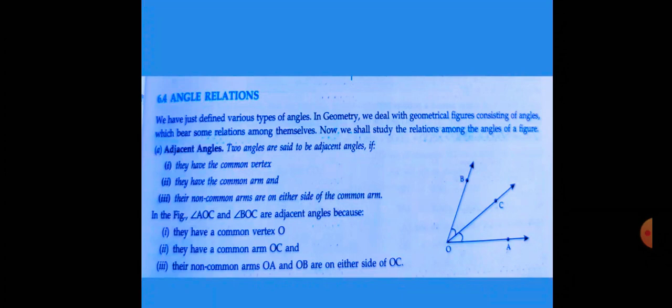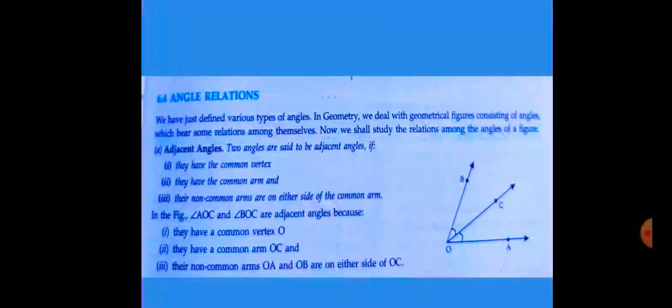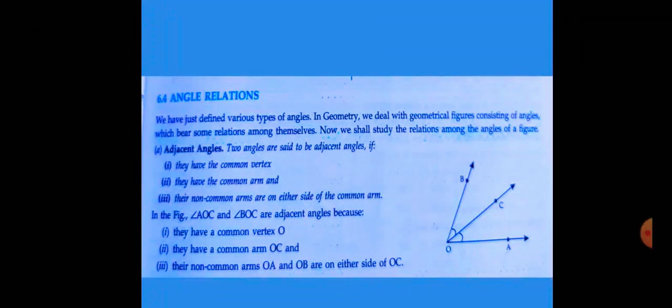And their non-common arms are on either side of the common arm. In figure, angle AOC and angle BOC are adjacent angles. They have a common vertex O, they have a common arm OC, and their non-common arms OA and OB are on either side of OC.